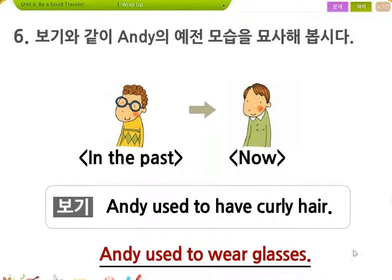자, 그러면 used to have: 주어 다음에 have, used to 바로 나왔어. 과거에 have curly hair, 곱슬머리를 가지고 있었죠. And used to wear glasses, 안경을 쓰고 있었죠.